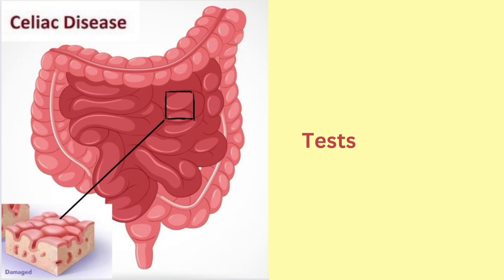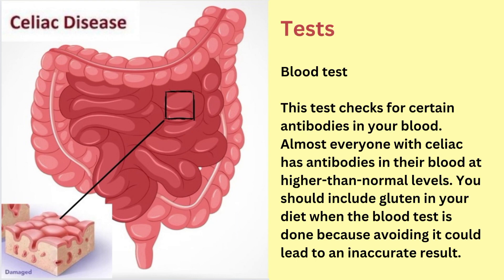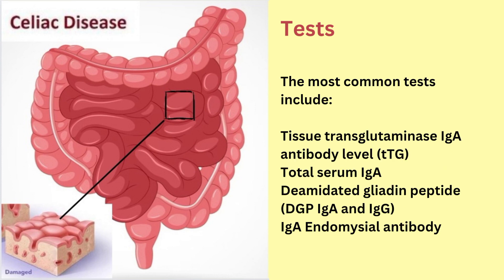Now let us discuss about the tests. The first is a blood test. This test checks for certain antibodies in your blood. Almost everyone with celiac disease has antibodies in their blood at higher than normal levels. You should include gluten in your diet when the blood test is done because avoiding it could lead to an inaccurate result. The most common tests include tissue transglutaminase IgA antibody level, i.e. the TTG test, total serum IgA, deamidated gliadin peptide i.e. DGP IgA and IgG, and IgA endomysial antibody.